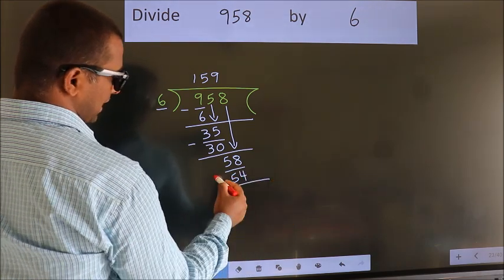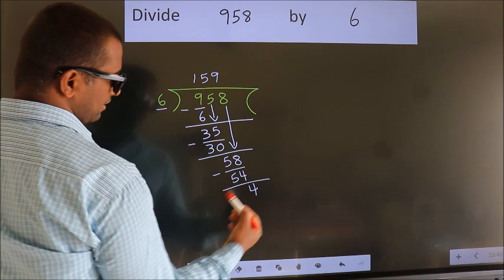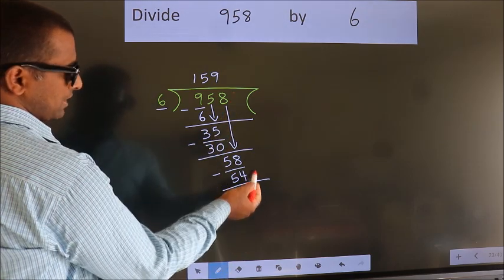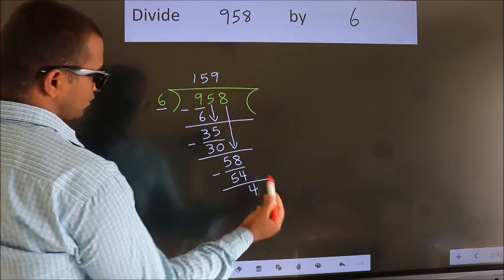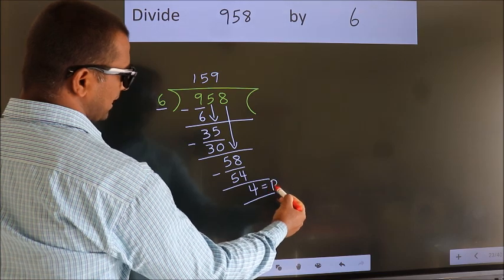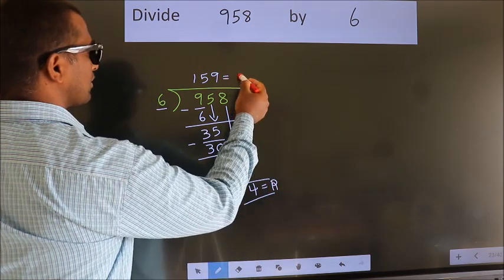Now we subtract. We get 4. No more numbers to bring down, so we stop here. This is our remainder. This is our quotient.